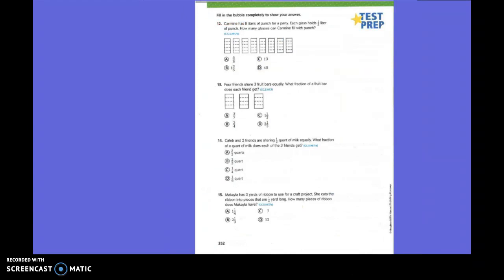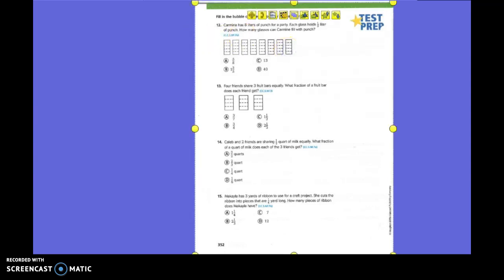Okay, on the back page, our 352. We're going to look at number 12. It says, Carmine has 8 liters of punch for a party. Each glass holds 1/5th liter of punch. How many glasses can Carmine fill? So these are his 8 liter bottles, and he's going to divide those into 5ths.